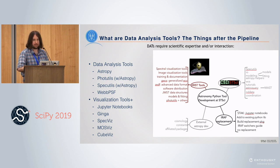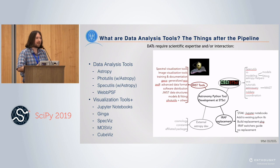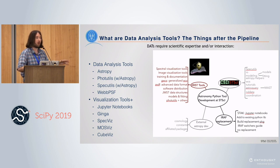Coming out the bottom of the pipeline and the archive are the data analysis tools — the things that actually require scientific intervention or human interaction. That's a fuzzy line, since some things require human setup rather than true intervention, and some pipeline parts are themselves data analysis tools. But it's a useful separation: the pipeline is more or less automated, while data analysis tools are where you really have to think about user experience because you actually have users.